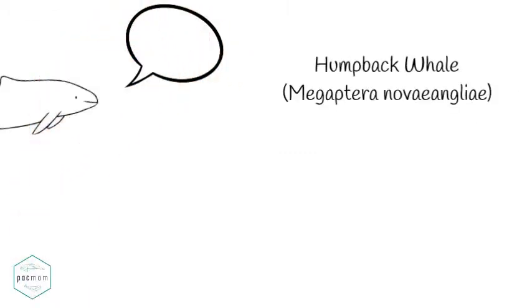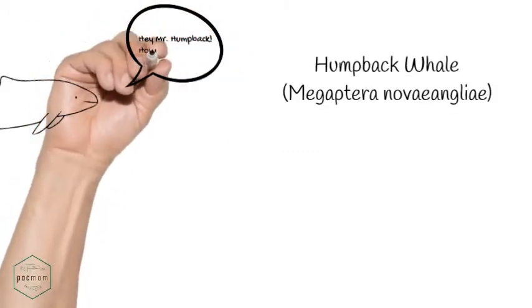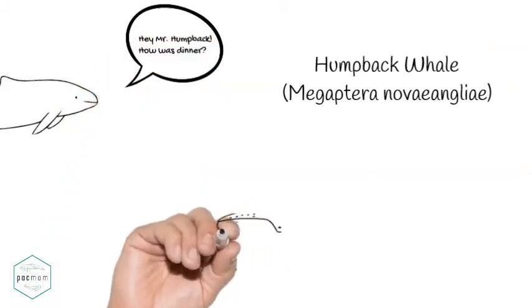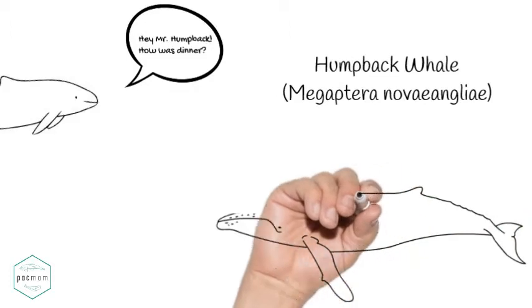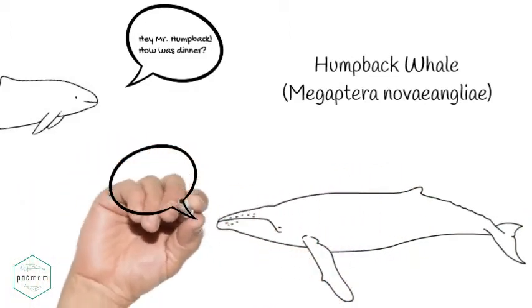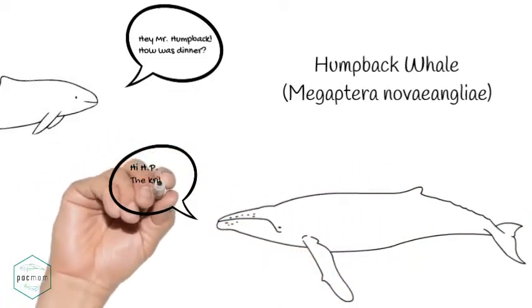The humpback whale is a baleen whale that can measure up to 60 feet, weigh up to 40 tons, and live up to 90 years. They have a characteristic small dorsal fin with a hump in the front. Every individual has unique markings on their fluke or tail that researchers can use to identify and track individuals.